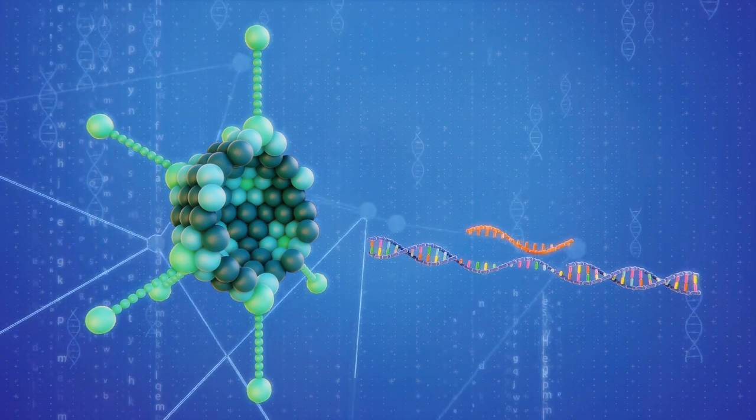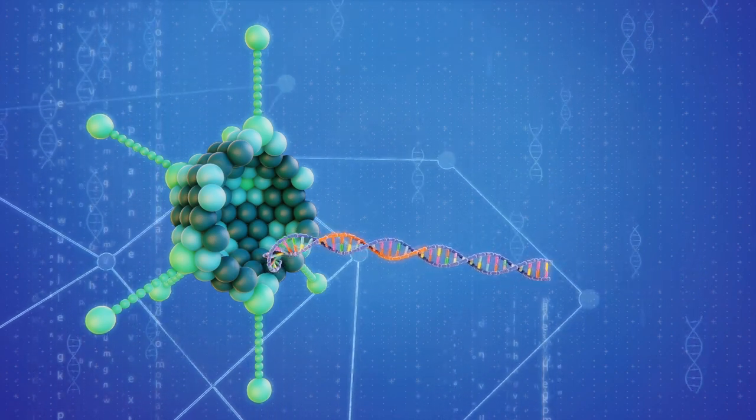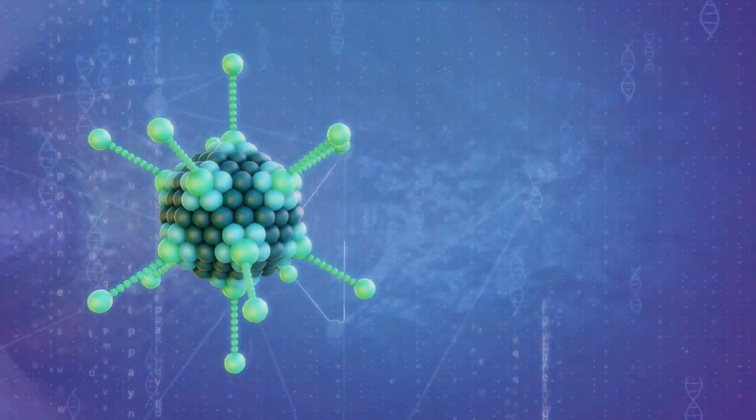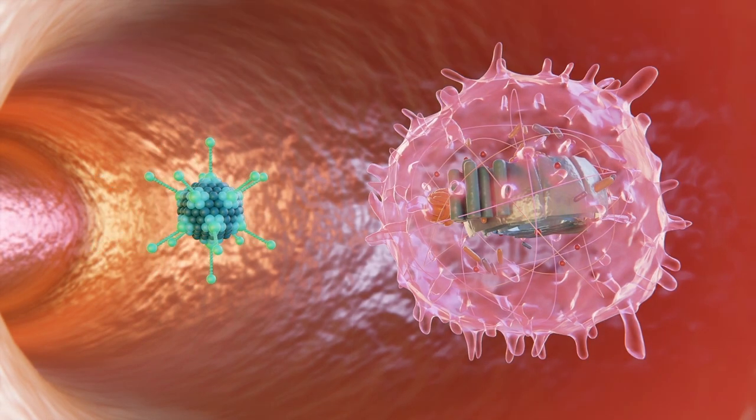The AstraZeneca-Oxford vaccine's chimpanzee adenovirus vector was previously used to make an Ebola vaccine. The chimpanzee adenovirus is genetically modified so that it cannot infect people, while the gene with the code of the spike protein is inserted.